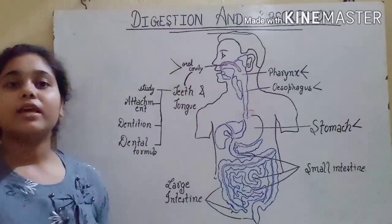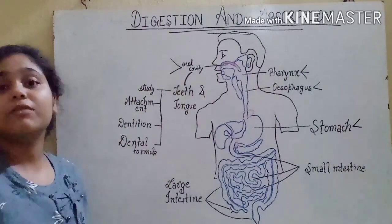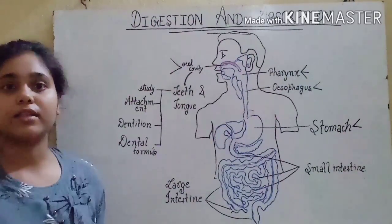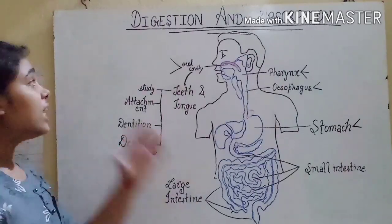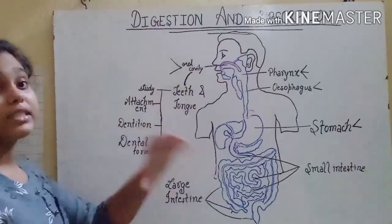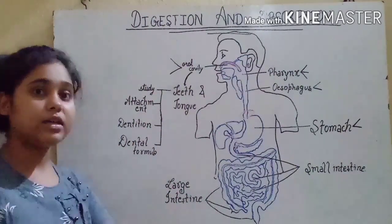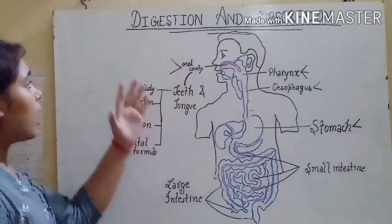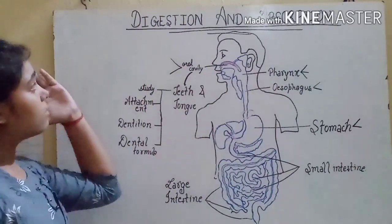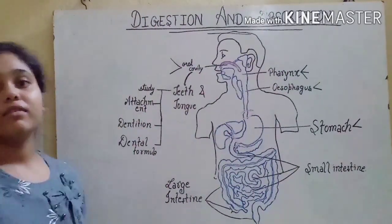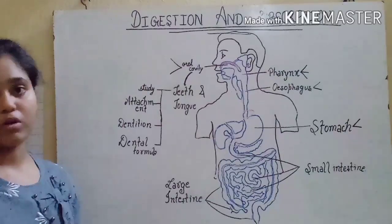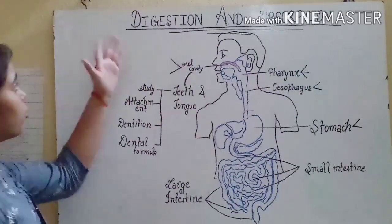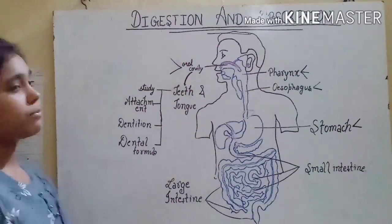So first of all, let's talk about human physiology. It carries 13 questions per year in NEET whole syllabus, and its weight is 20% in the whole biology syllabus. So let's come to the point: digestion and absorption.